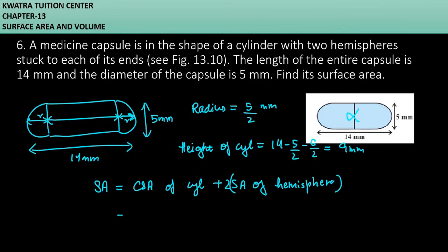The CSA of cylinder is 2πrh plus 2 times the surface area of hemisphere, which is 2πr². So the final formula is 2πrh plus 4πr². Now let's substitute our values and see what will be the final answer.